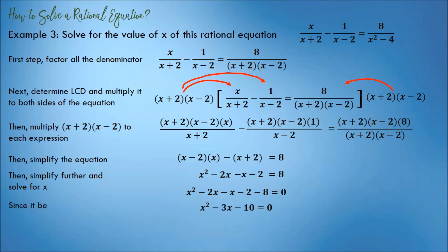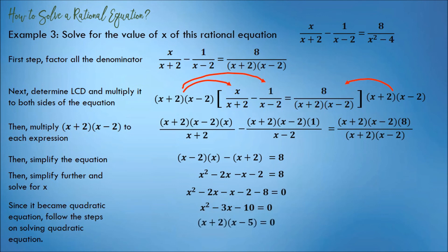Since it became a quadratic equation, follow the steps on solving a quadratic equation. We can use factoring here, because x squared minus 3x minus 10 has factors (x plus 2) and (x minus 5).